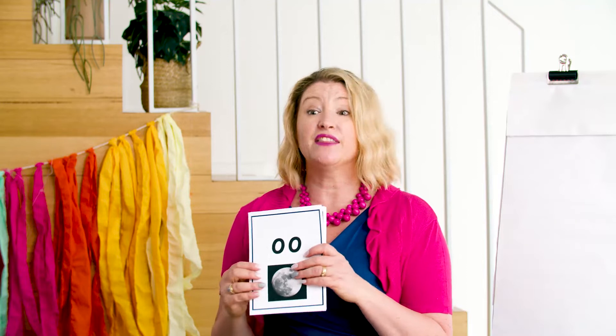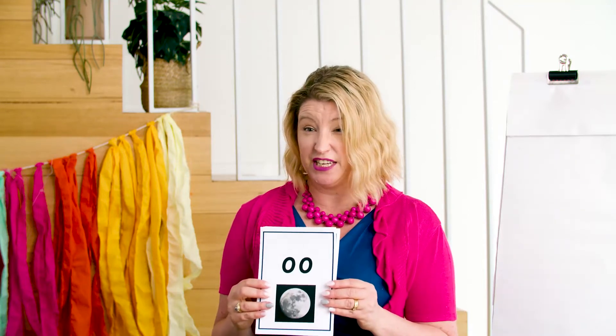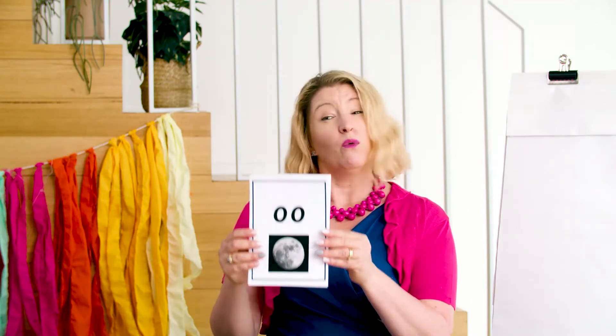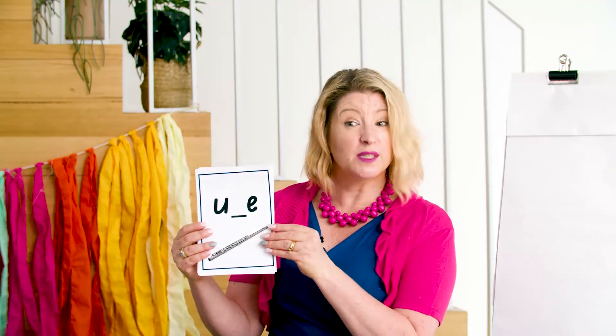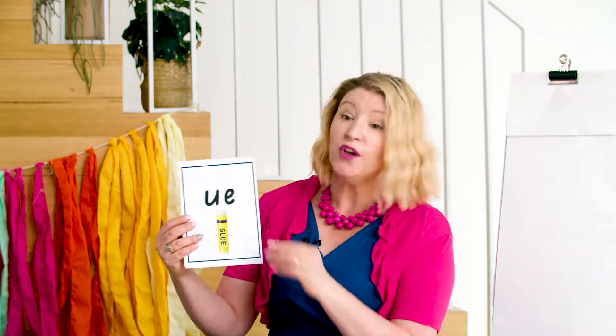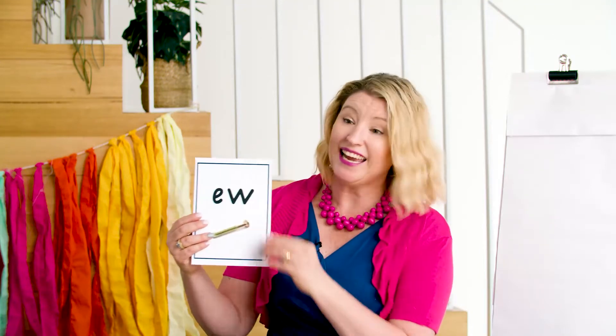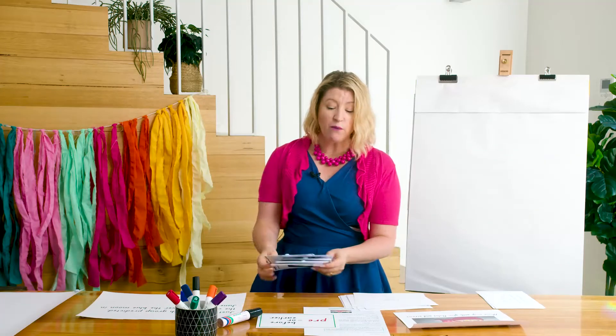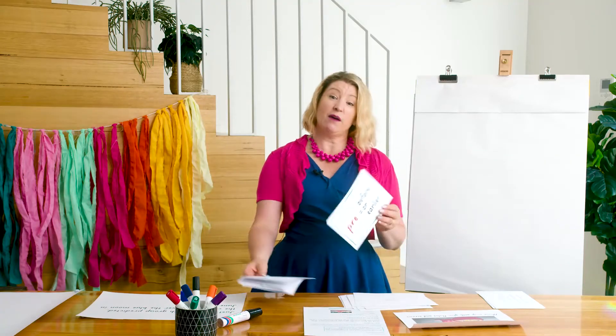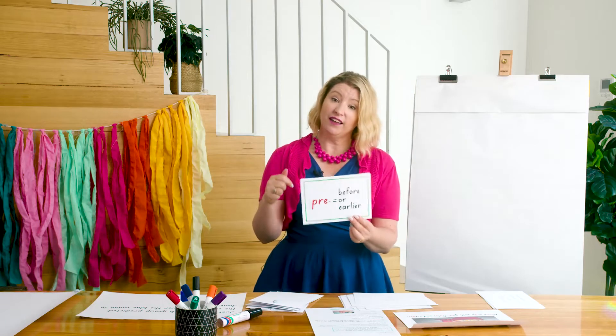So today is a review. We're going to look at all the different graphemes that can make the OO sound as part of our learning intention today. So remember, we're reviewing and using double O for OO, split vowel E for OO, UE for OO, EW for OO, and OU for OO. And we're also looking at our prefix 'pre', meaning before or earlier.